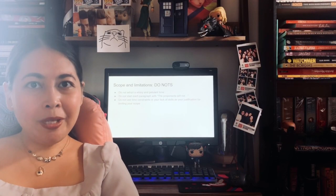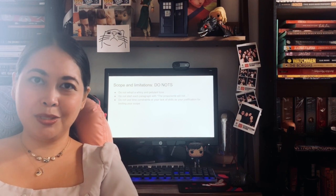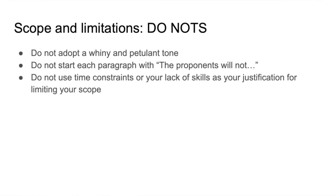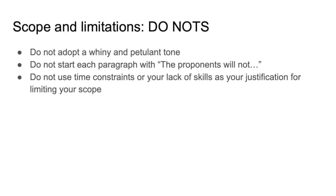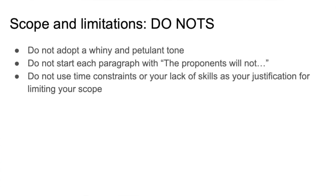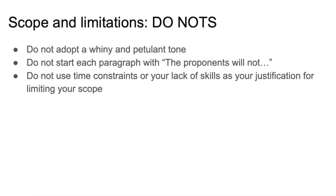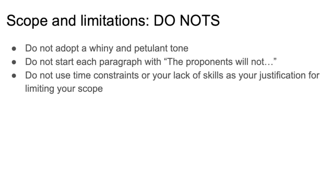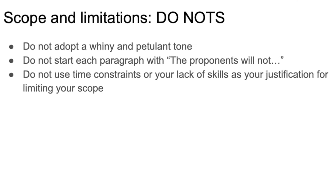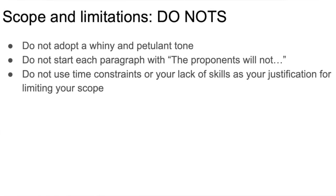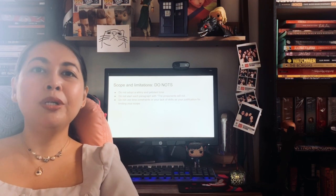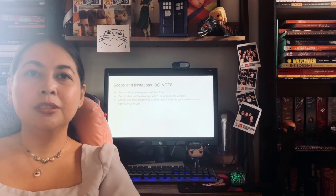It is very tempting to use the scope and limitations as a portion to dump all of your excuses about your study. But as much as possible, when you write this part, you have to take a tone that is not whiny, so that this does not make you sound like a spoiled child. Avoid starting sentences with 'the researchers will not do this' or 'the proponents cannot do that' — this makes it sound like you are basically not doing anything. Instead, phrase your scope and limitations such that you are trying to do something very important, but only to a certain extent. Try not to use your lack of skills or limitations in time and budget as an excuse. There are better ways of phrasing this, and it would be best to consult with your own advisors on how best to phrase these kinds of limitations.